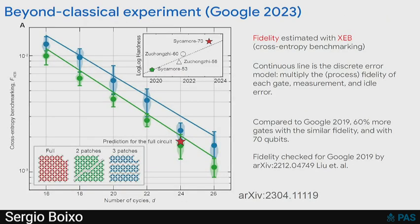We redid the experiment — John covered the 2019 version, and this is the new version, put in the archive in April. There were also two experiments from USTC as well, which you see in the inset. This was done with 70 qubits. The x-axis is the depth of the random quantum circuit, and the y-axis is the fidelity estimated with cross-entropy benchmarking.